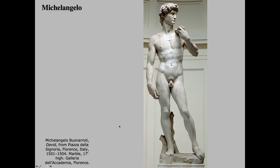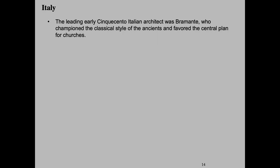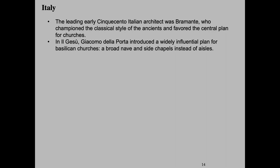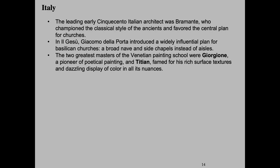The leading early Cinquecento Italian architect was Bramante, who championed the classical style of the ancients, looking back to the Greeks and their architectural style. He was very interested in the central plan for churches — a way to construct a church with a central plan, which is still how many of us are used to seeing churches today. Then Gesù — Giacomo della Porta — introduced a widely influential plan for Basilican churches with a broad nave and side chapels instead of aisles. The two greatest masters of the Venetian painting school were Giorgione, a pioneer of poetical painting, and Titian, famed for his rich surface textures and dazzling display of color in all its nuances.